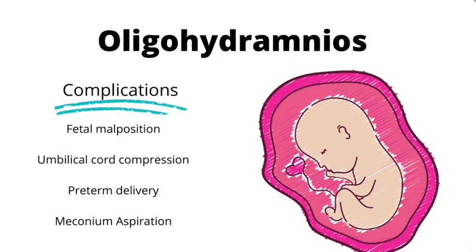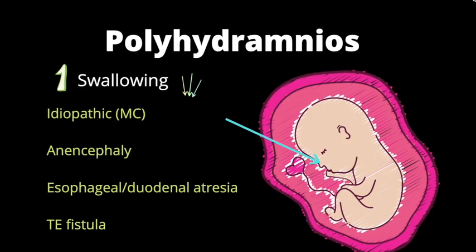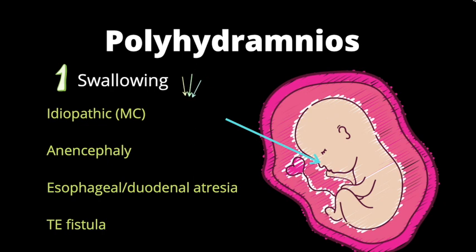Now let's talk about polyhydramnios. As defined by the amniotic fluid index, polyhydramnios is a state where the amniotic fluid is greater than 24 centimeters. A major contributing factor is swallowing — if swallowing is decreased, more amniotic fluid remains in the amniotic sac. Causes of decreased swallowing include, most commonly, idiopathic, as well as anencephaly, esophageal or duodenal atresia, and tracheoesophageal fistula.